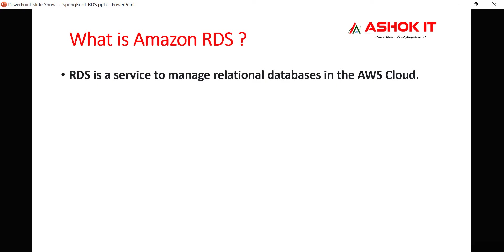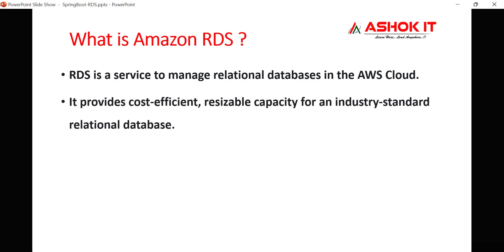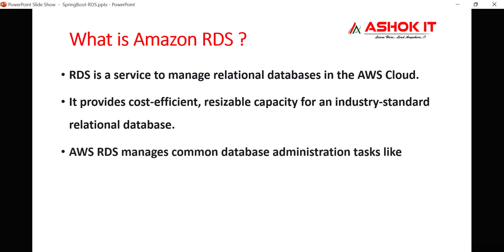RDS is a service in the AWS cloud which is used to manage relational databases. Instead of setting up database software yourself and managing security, backup, and updates, you can use AWS RDS — a managed service in the AWS cloud — to set up a relational database in the cloud.